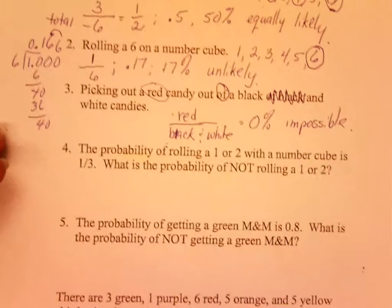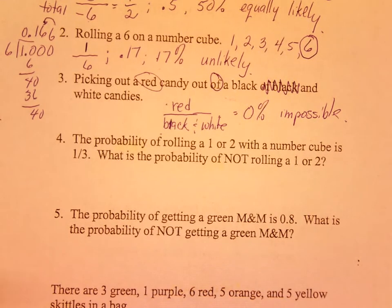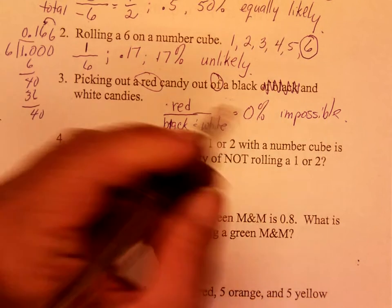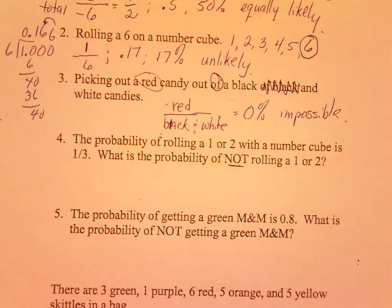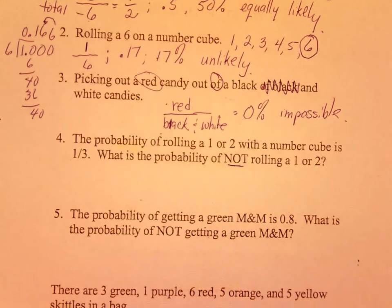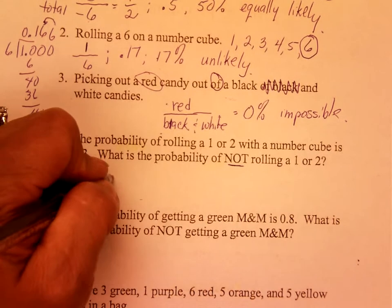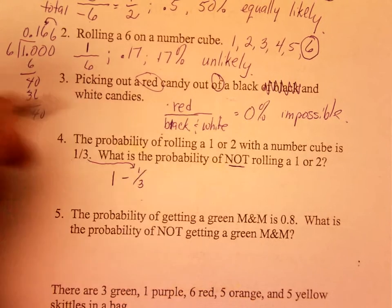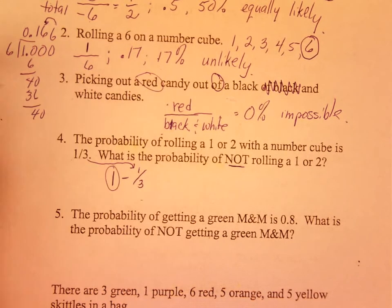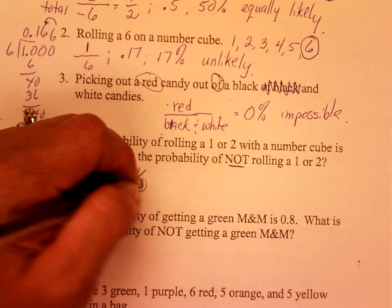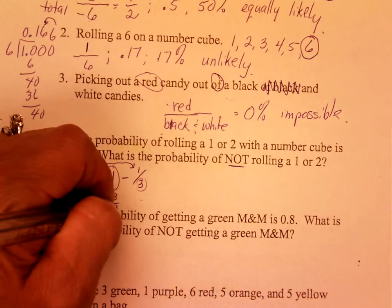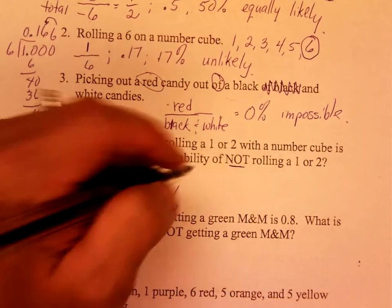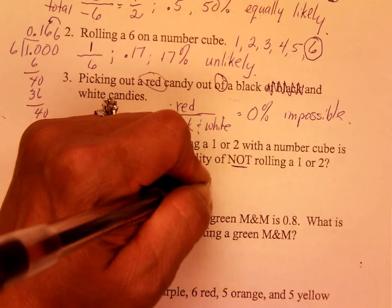Example four: the probability of rolling a 1 or 2 on a number cube is one-third. What is the probability of not rolling a 1 or 2? This is your complement. In probability, everything must equal 1. So you calculate 1 minus one-third. Change 1 to three-thirds minus one-third, and that equals two-thirds. So the complement is two-thirds.